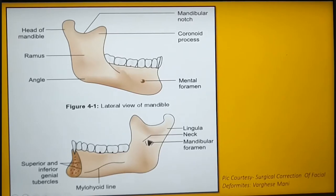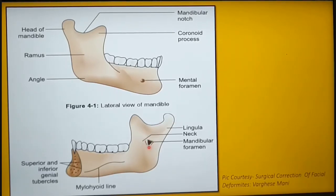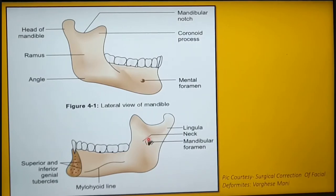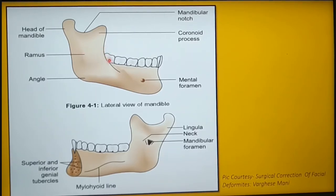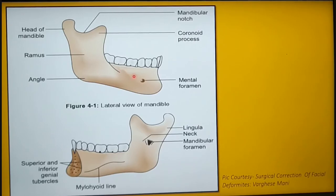Let's look at the anatomy relevant to sagittal split osteotomy. On the medial view of the mandible, you can see the mandibular foramen, through which the inferior alveolar nerve enters the inferior alveolar nerve canal. At the opening of the foramen is a tongue-like bony projection known as the lingula. The first medial osteotomy cut is performed just superior to and posterior to the lingula. On the lateral view, you can see the ascending ramus and external oblique ridge, where the second osteotomy cut is performed, extending to the second molar region. The third vertical osteotomy cut connects the oblique cut to the inferior border of the mandible.